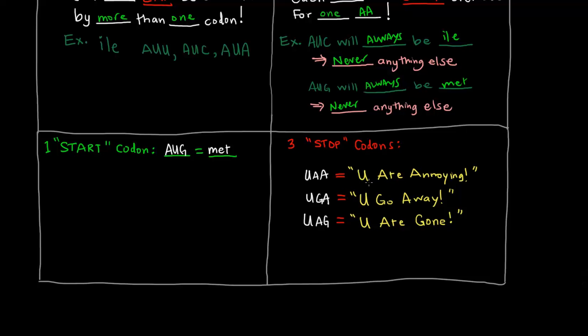How do I remember this? It's a little bit of a silly way, but if you think about somebody, if everyone has like a friend or a little brother or sister or cousin or anybody that sometimes is annoying. So when people are annoying, you want them to stop, right? So you will tell them, you are annoying, UAA, you go away, you tell them to go away, UGA, and eventually if they do go away, you are gone, UAG. So UAA, UGA, UAG. Simple, silly, but it's an easy way to remember it.